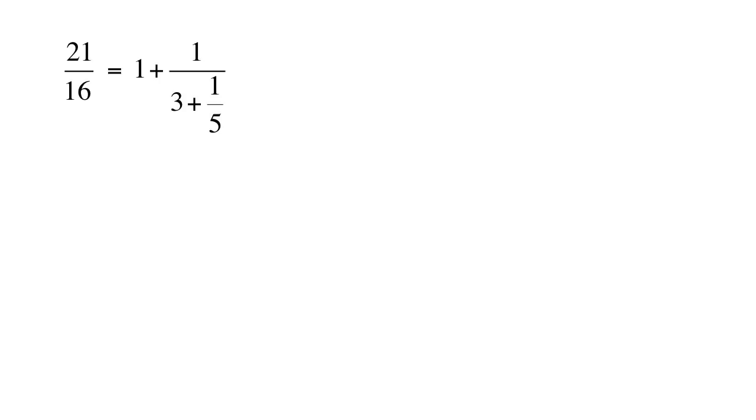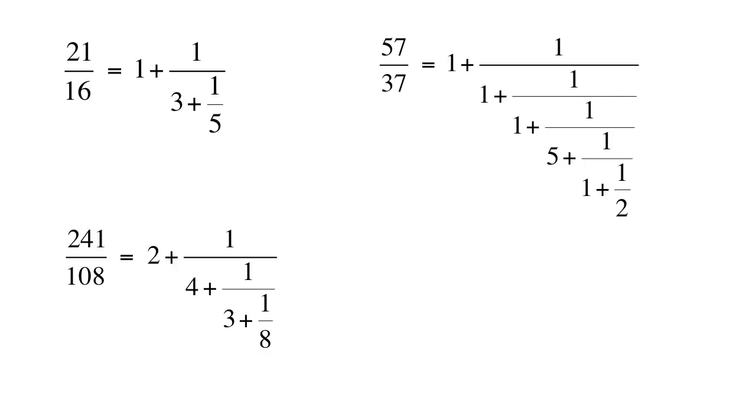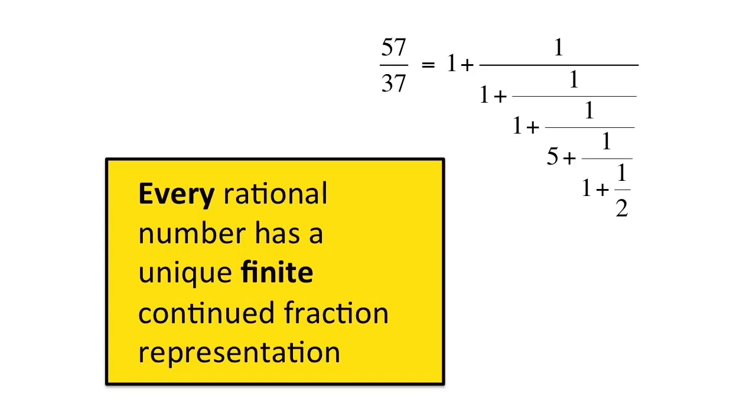And proof 5. A continued fraction is a way to write a rational number as a combination of several fractions, and each numerator is a 1. It is known that every rational number has a unique finite continued fraction representation.